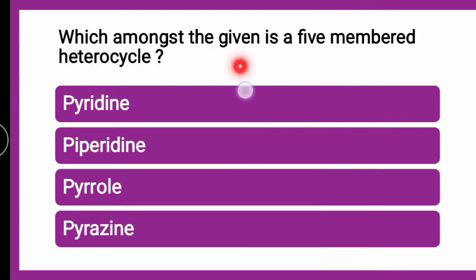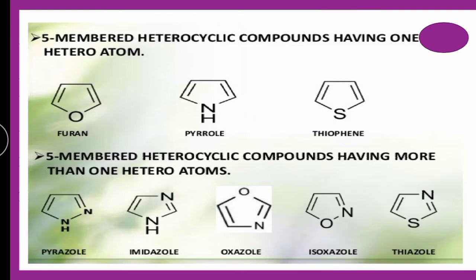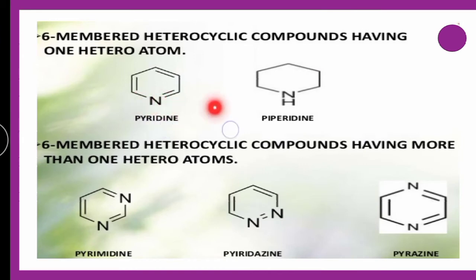Next question: which amongst the given is a 5-membered heterocycle — whether pyridine, piperidine, pyrrole, or pyrazine? Pyridine, piperidine, and pyrazine are all 6-membered heterocycles. The correct answer is pyrrole, which is a 5-membered unsaturated heterocycle containing nitrogen.